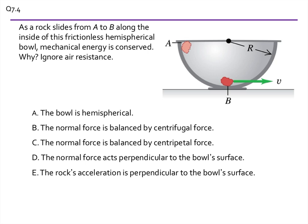All right, so here we have this rock going around in this hemispherical bowl, and it says mechanical energy is conserved. So remember that if mechanical energy is conserved, the only forces that can do work would be the examples that we had that had potential energy functions, which would be gravity and a spring. In this case, we do have gravity.